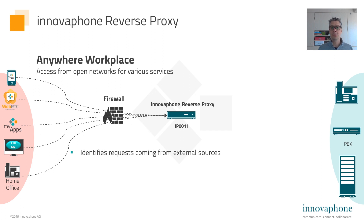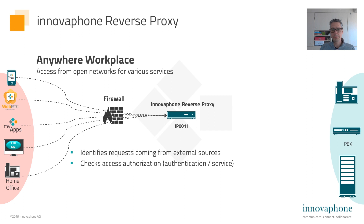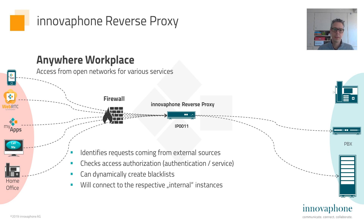The reverse proxy identifies requests from external sources and checks the access authorization. It can dynamically create blacklists, even for IP addresses which are not allowed to get contact to internal resources. It will then connect to the internal instances such as the IP phone, the PBX, or the MyApps platform.